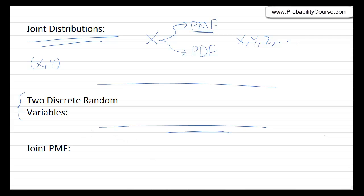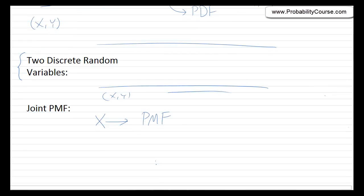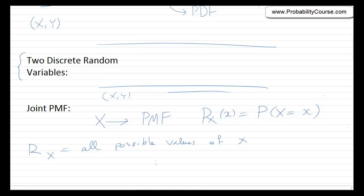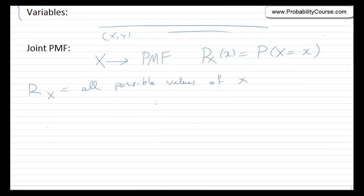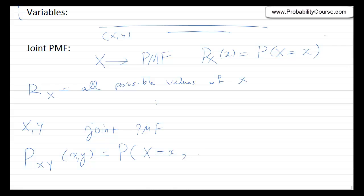Let's assume that I have two random variables, x and y, and we want to know how to deal with them. Remember, if I have a single discrete random variable x, I define its probability mass function as p_x(x) = P(X = x). The range of that random variable is defined as all possible values of x. Now, if I have two random variables x and y, we define the joint probability mass function as p_xy(x, y) = P(X = x, Y = y).